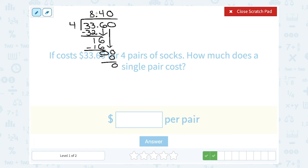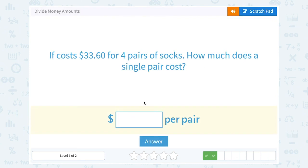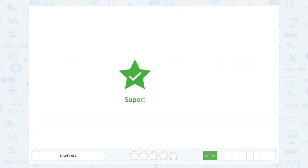So either way, we get $8.40. Even if you had just 8.4, that's the same thing as 8.40. So it's $8.40 for a single pair of socks. So it's $9.40 for a single pair of socks. Thank you.